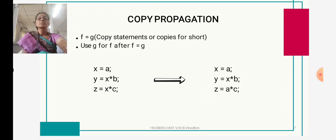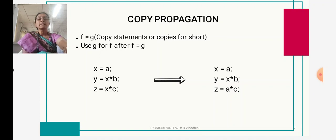Next is copy propagation. Copy propagation means: suppose you have an assignment statement where one variable is assigned to another variable. In the remaining following statements, the assigned variable is used instead of the original variable. For example, consider: 'x = a', 'y = x * b', and 'z = x * c'. In the first statement, 'a' is assigned to 'x'. So everywhere 'x' appears, we replace it with 'a'. For example, 'y = x * b' becomes 'y = a * b'.